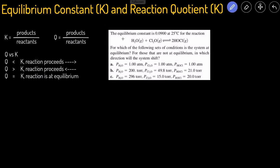So in this problem, it's giving us the equilibrium constant. So it tells us that K equals 0.0900 at this particular temperature. And we have this reaction that's balanced, and then it's asking us for each of these conditions, is the reaction at equilibrium? And if it's not at equilibrium, in which way will the reaction proceed to the right or to the left to reach equilibrium?